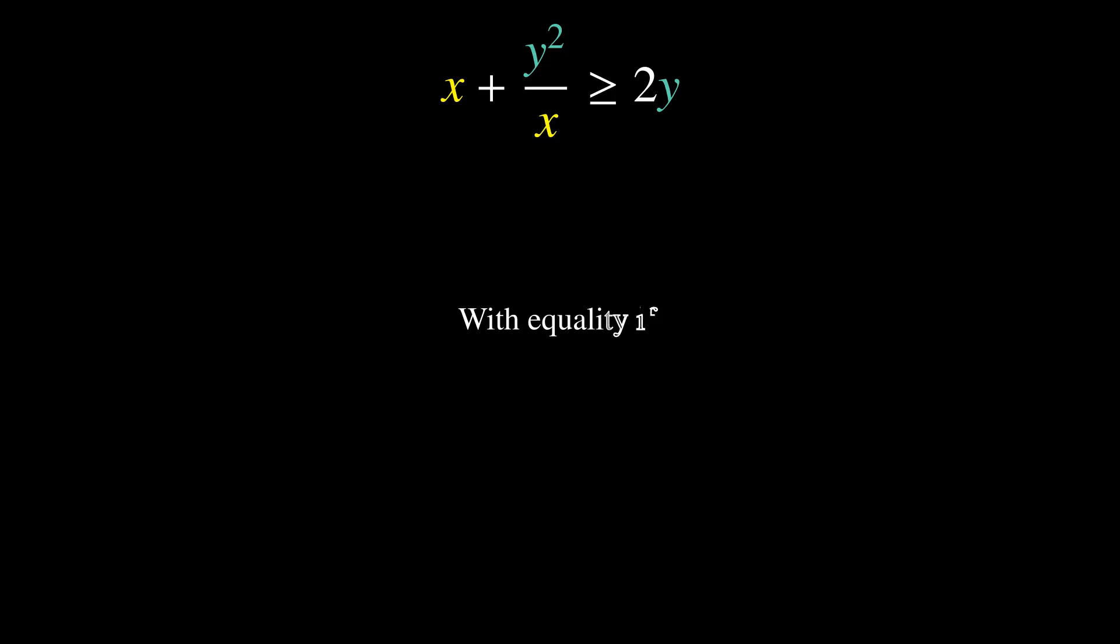According to the geometric arithmetic inequality, equality takes place when the first term is equal to the second. This means that x squared is equal to y squared, and since x and y are positive, x equals y. And that's the case of equality.